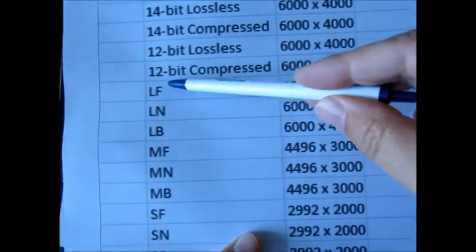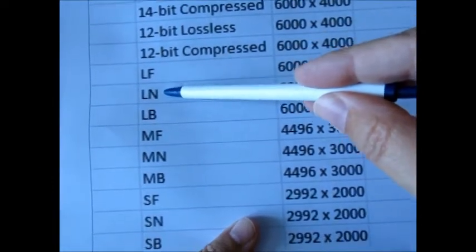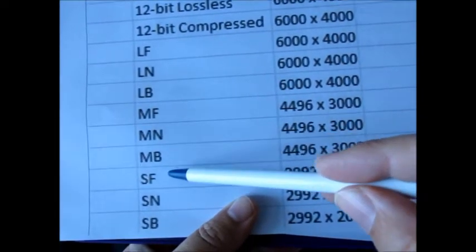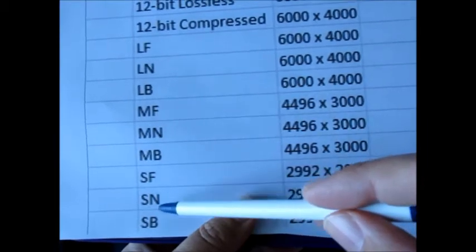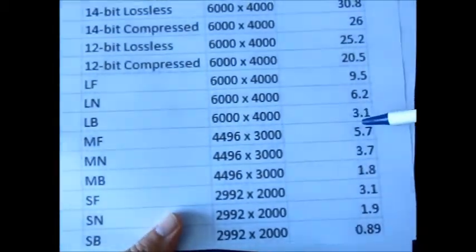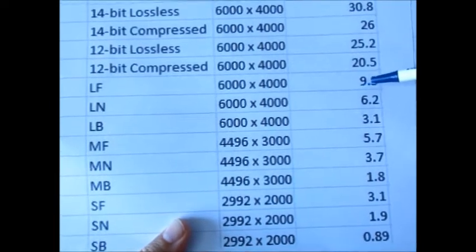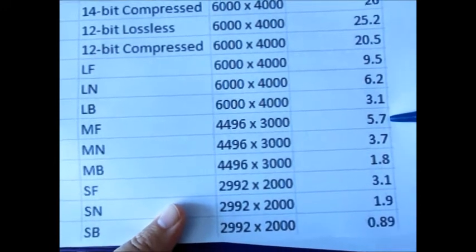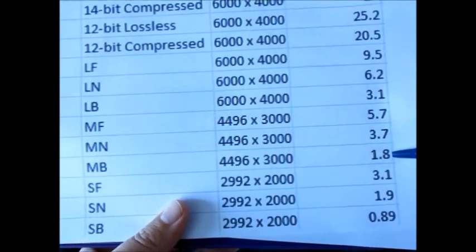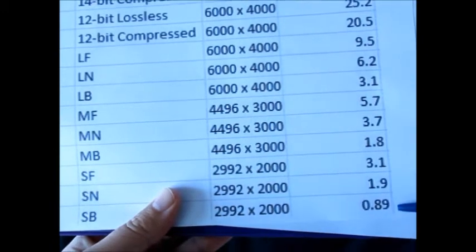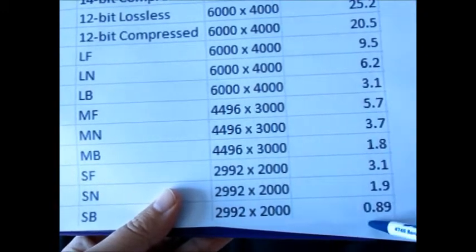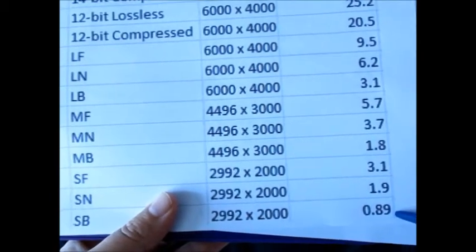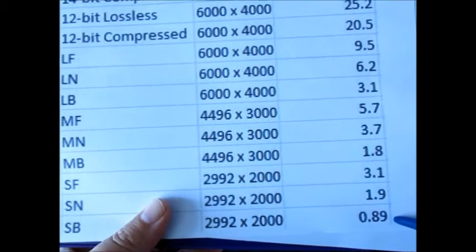Now this starts the JPEGs. Let's talk about: this is large fine, large normal, large basic, medium fine, medium normal, medium basic, and small fine, small normal, small basic. Let's look at their corresponding file sizes. For a large fine we're at 9.5 megs, large normal 6.2, 3.1, 5.7, 3.7, 1.8, 3.1, 1.9, and 0.89 megs. This is the only size that's actually sub-1 megabyte: 890 kilobytes for the small basic.